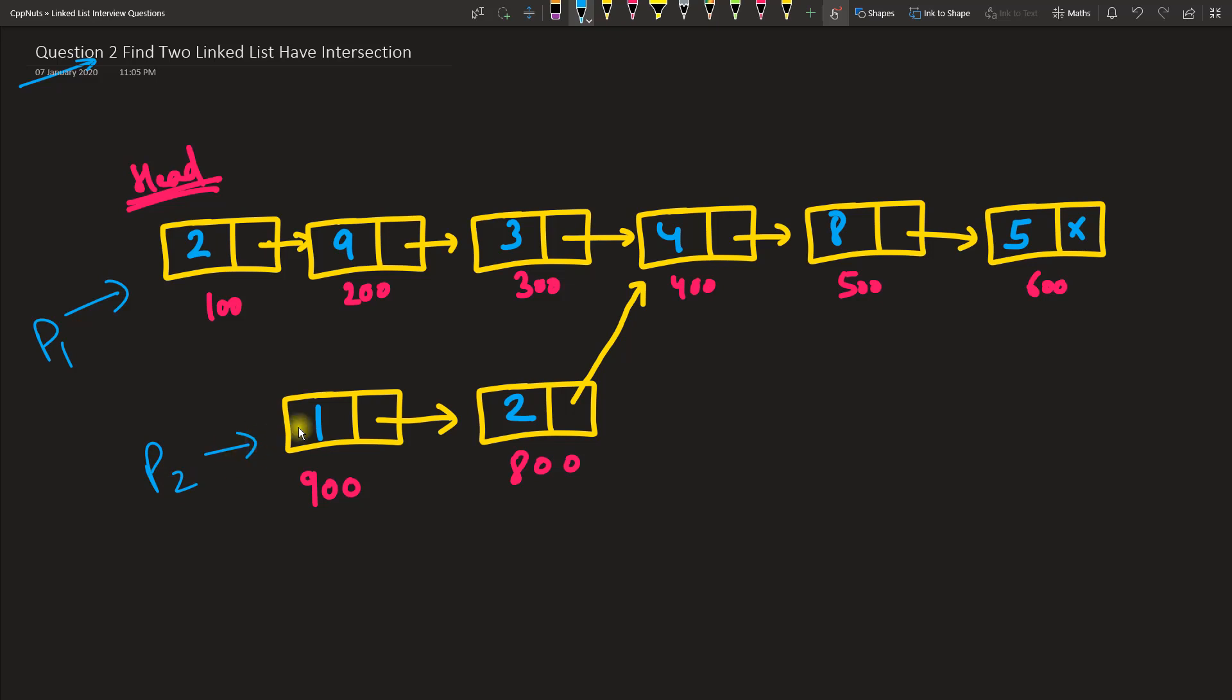We are just supposed to check whether given two pointers—so let's consider this one is p1 and this is your p2—so initially you will be having p1 and p2 and you'll be told that you have two lists.